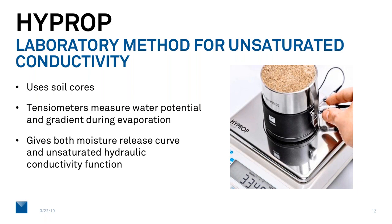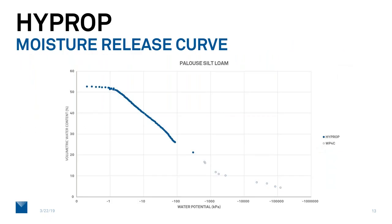Very few methods exist for getting that unsaturated conductivity function, but this does it nicely. I've just put one of those curves that comes out of that here. It's the moisture release curve for a soil, the Blue Silt Loam in this case. The volumetric water content is plotted on the vertical axis, and the logarithm of the water potential or suction is plotted on the horizontal axis as a log scale. I don't have a graph here that shows the unsaturated conductivity function, but we get similar detail to this with that function.